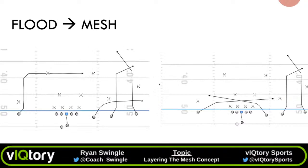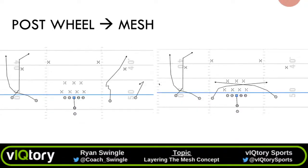We had a question about using the back as the underneath route with the backside receiver setting the pick. I have seen that and there are some film cut-ups of it. At Oberlin, we primarily have the back running the wheel into the flat. But I do have cut-ups of the Packers this past season where Matt LaFleur has the back as the underneath pick player on the drive route. Not something I personally do, but I see the value in it.